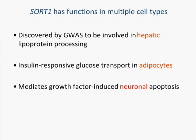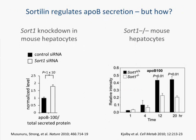Previously, sortilin had been implicated by GWAS studies and a series of functional studies in mice to be involved in hepatic lipoprotein processing — our particular interest in studying this gene. Studies had also shown in mice that it might function in the insulin response and glucose transport of adipocytes, as well as mediate growth factor-induced neuronal apoptosis.